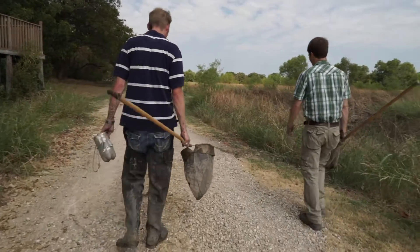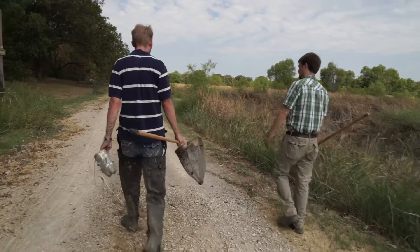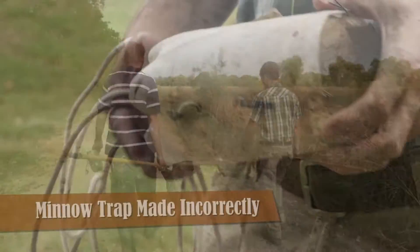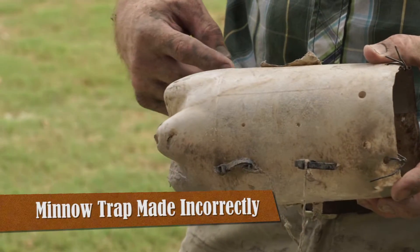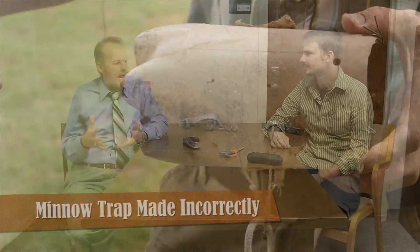All right Phillip, so when we were out at the wetlands we kept seeing all these little plastic traps and you explained how scientists use these to catch the critters that are in the water. Tell us a little bit about how to make these traps, how to make them right.